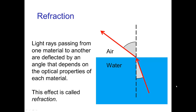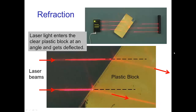What you're observing here are examples of a phenomenon known as refraction. Refraction is the effect in which rays of light, when they pass from one material to another, are typically deflected in their direction. A light ray coming up out of the water when it enters into the air is refracted — its direction changes. Here's another example: I have a couple of laser beams striking this clear plastic block, and inside the block we see that the beam is traveling in another direction, deflected from its original path.